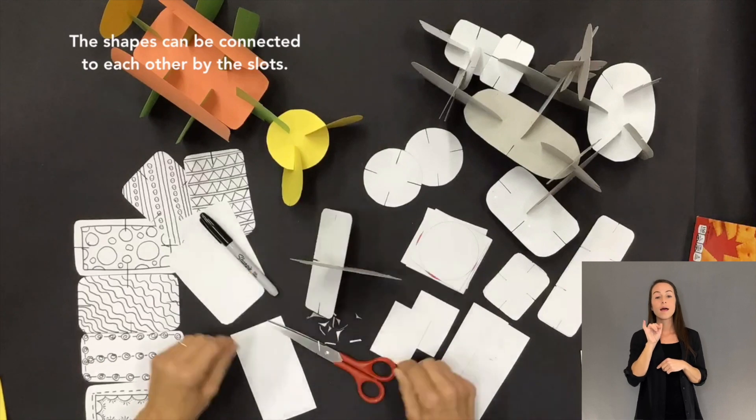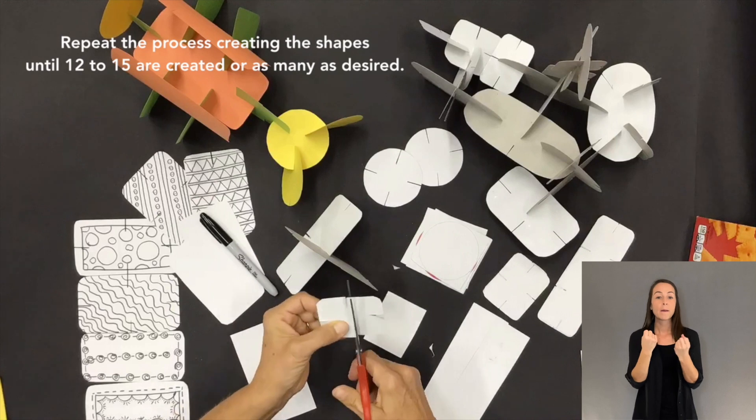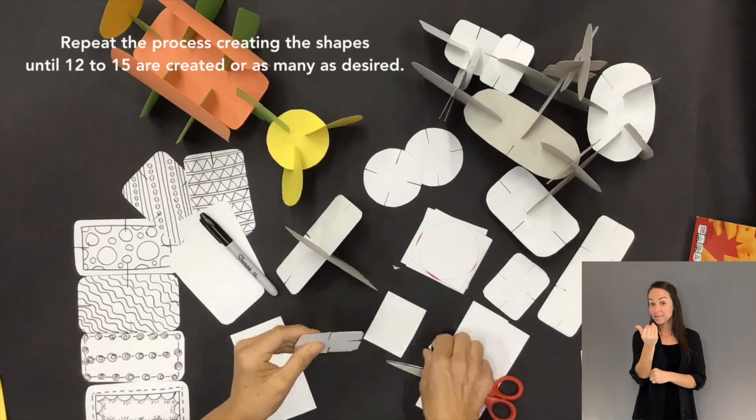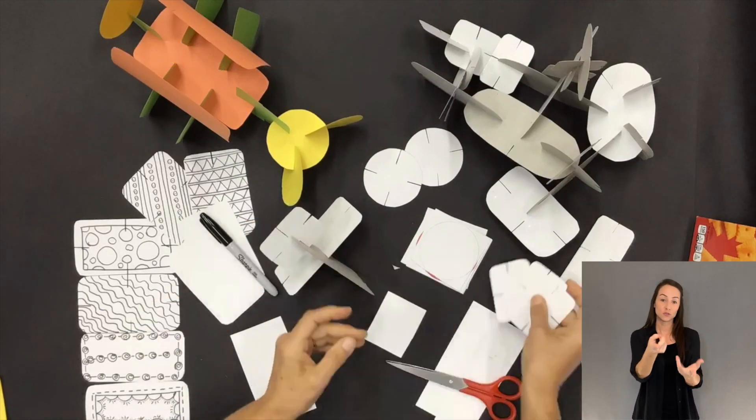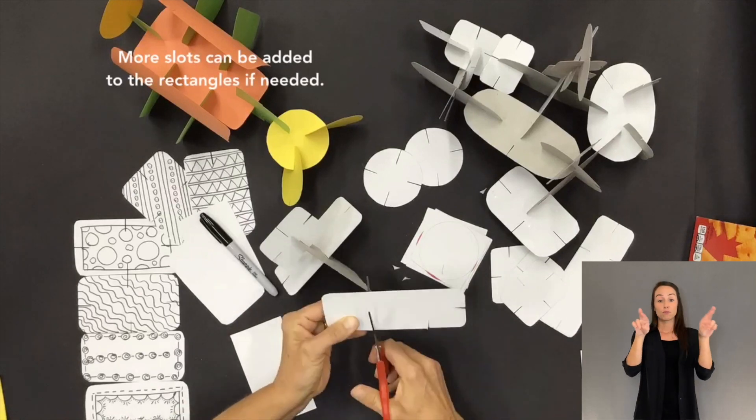The shapes can be connected to each other by the slots. Repeat the process creating the shapes until 12 to 15 are created, or as many as desired. More slots can be added to the rectangles if needed.